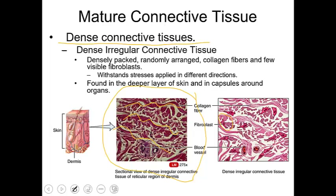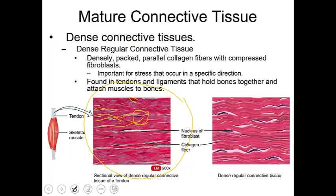The next type is dense regular connective tissue — densely packed with protein arranged in a regular or stacked fashion. In this micrograph, you can see neatly stacked collagen fibers, the nuclei of fibroblasts dispersed throughout, and a little ground substance. Dense regular connective tissue is most commonly found in tendons and ligaments — tendons connect bone to muscle, and ligaments connect bone to bone.